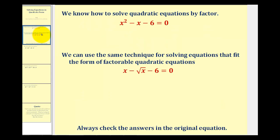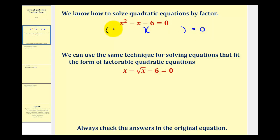Let's start with a review on solving a quadratic equation by factoring. x squared minus x minus six equals zero can be solved by factoring, since this trinomial factors into two binomial factors. We start with the factors of x squared, which are x and x, and then we find the factors of negative six that add to negative one, which are negative three and positive two. So we have x minus three and x plus two.